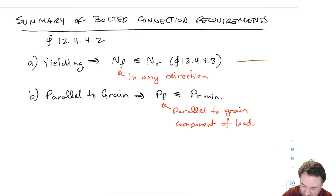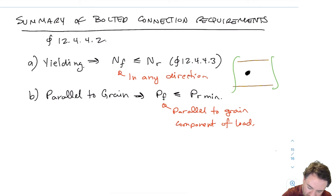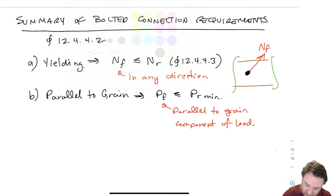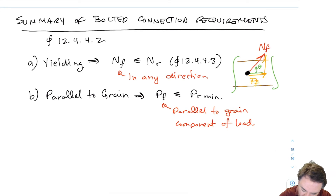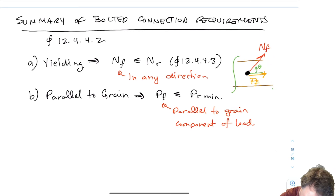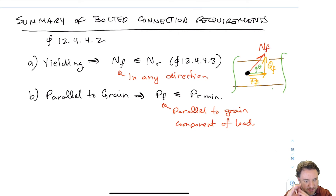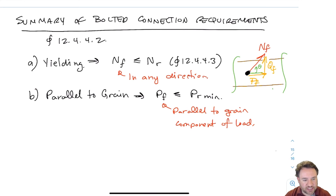For parallel to grain: if I have a piece of wood with a bolt, and my load NF is on an angle theta between the grain and the load, I can split NF into two components — PF, the parallel-to-grain component, and QF, the perpendicular-to-grain component. For yielding, I use the full NF. For parallel to grain, I use only the parallel-to-grain component PF and check it against all my parallel-to-grain resistances — what I like to call PRmin.